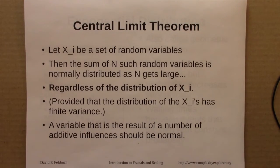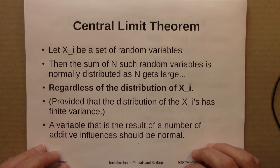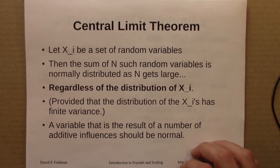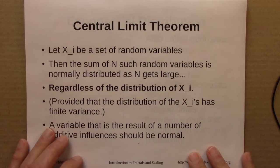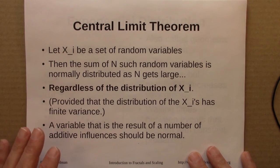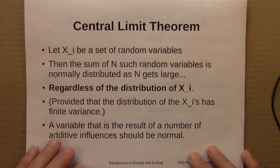So why is the normal distribution so important? Well, it turns out there's a good reason to expect to see it all the time, as we do, and that reason is given by the central limit theorem. So here's what this says. Suppose we have a set of random variables, x1, x2, x3.